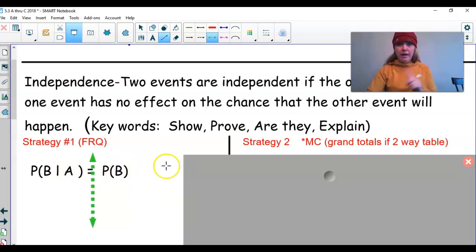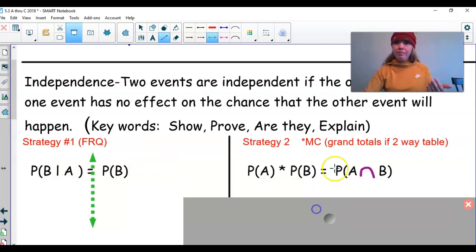If the two are equal, then those two events are independent. Another way you could look at it is, again, two problems. Based off the numbers they give you, you could figure out the probability of A and then the probability of B separate, and then you would multiply them together.